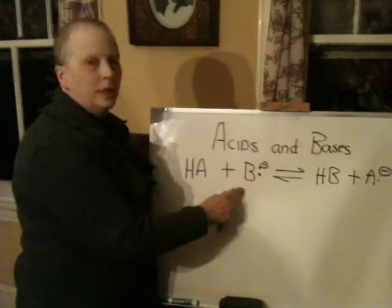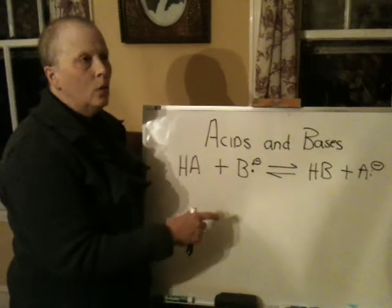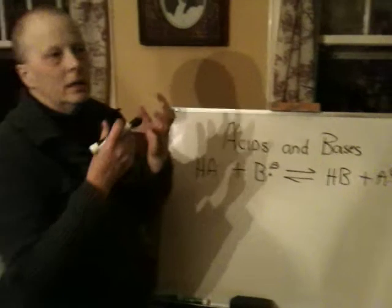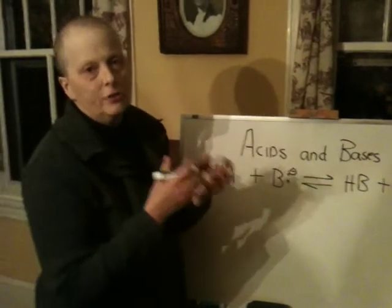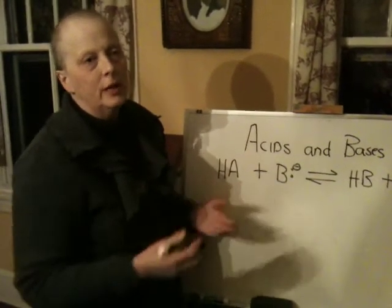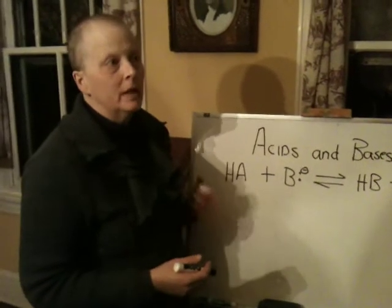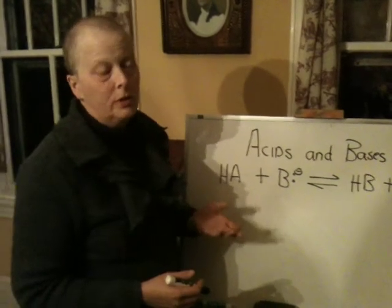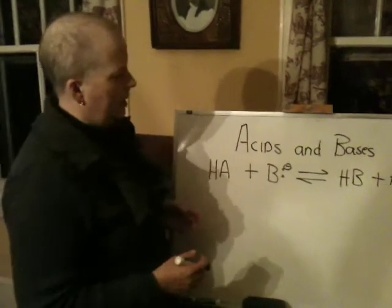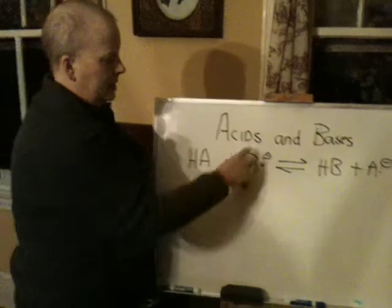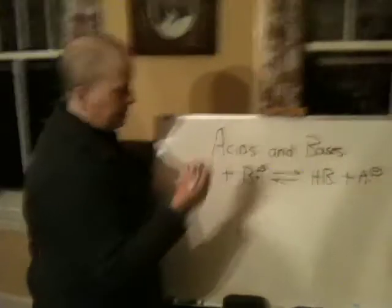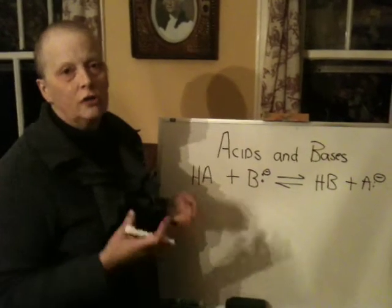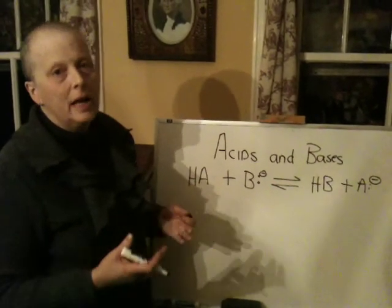A base is really just something with a lone pair or a pi bond. But really, what is a base? A base is something that has negative charge that it's able to donate to something else. That's why you learned a Lewis base is an electron pair donor, and a Bronsted base was a proton acceptor. Generally speaking, the strongest bases have a concentrated charge — there's just a lot of charge on an atom. It's not a very complicated idea.